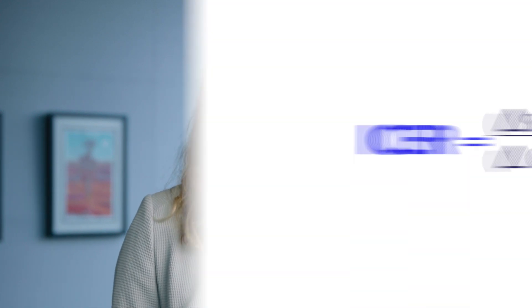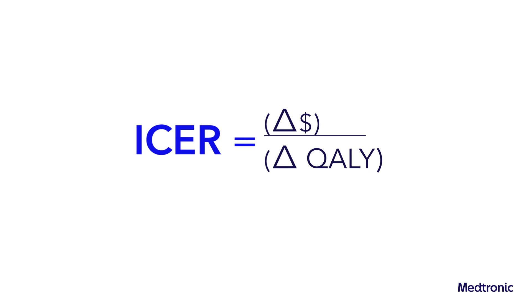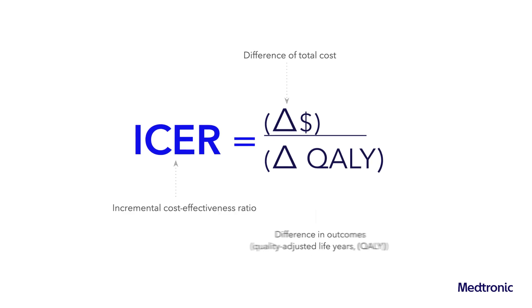Now, let's look at how a cost-effectiveness analysis is developed. A cost-effectiveness analysis compares the cost and effect of two interventions — usually the intervention of interest compared with the standard of care — and is summarised using an incremental cost-effectiveness ratio, also known as an ICER. This ratio shows the incremental costs over incremental quality-adjusted life years between the two comparators.